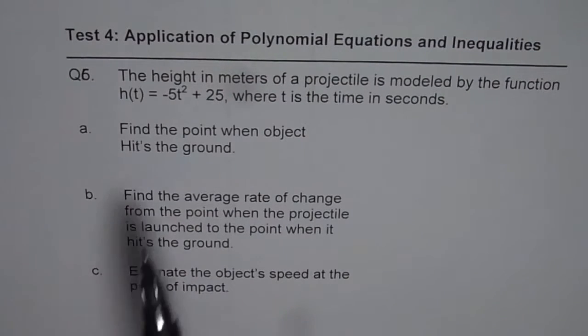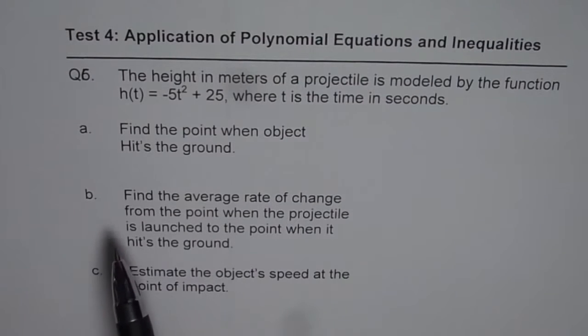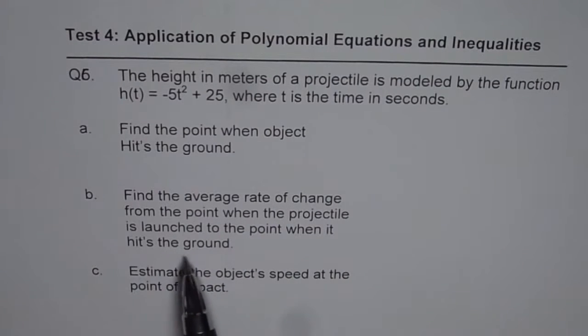It has three parts. You need to find the value when the object hits the ground. Part b is find the average rate of change from the point when the projectile is launched to the point when it hits the ground. And part c is estimate the object's speed at the point of impact, that means when it hits the ground. So let's solve it one by one.